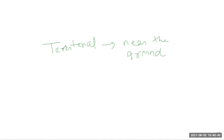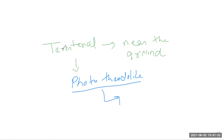In terrestrial photography, the photograph is taken by a photothoedolite, which is a combination of a camera and a theodolite. Photothoedolite means theodolite plus camera.